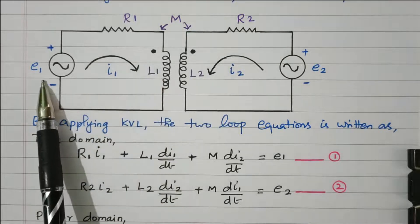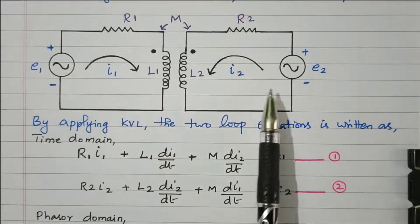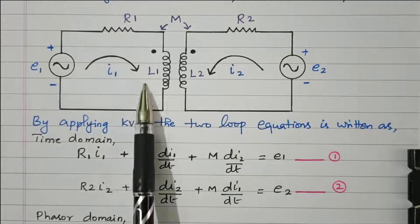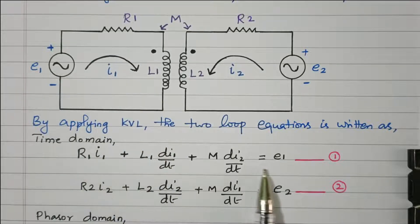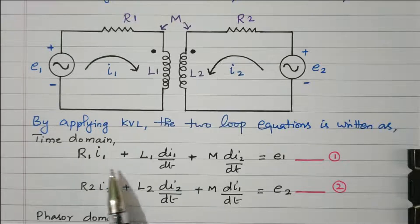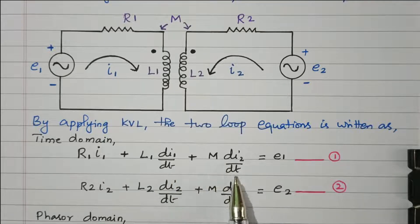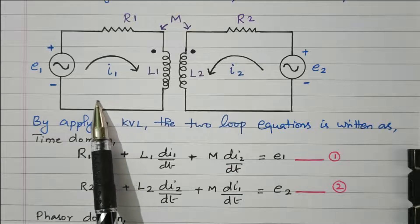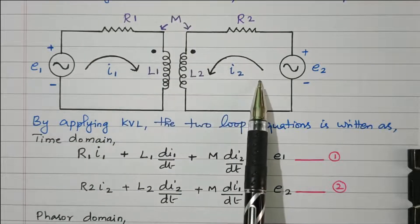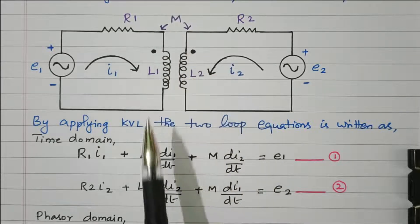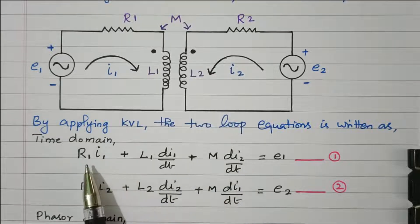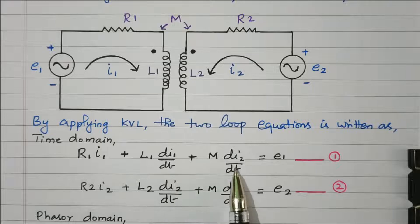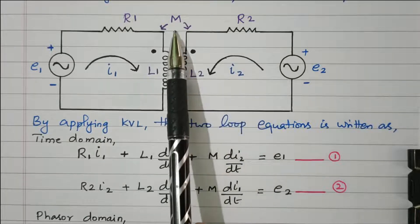The applied voltage equals resistive drop plus inductive drop — voltage rise equals voltage drop. Based on that, for the first circuit: e1 = I1·R1 + L1·(dI1/dt) + M·(dI2/dt). This mutual inductance term uses I2 because it is due to I2 only. For resistive and inductive drops we use I1, but for mutual inductance we use I2.